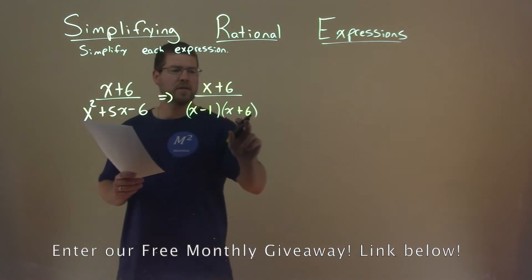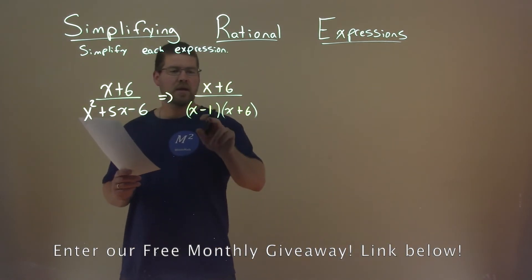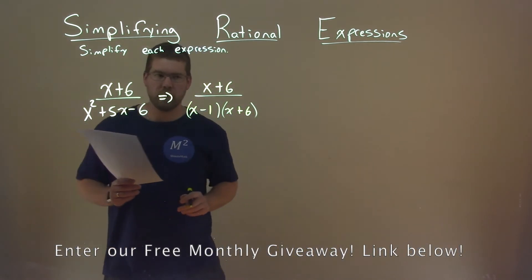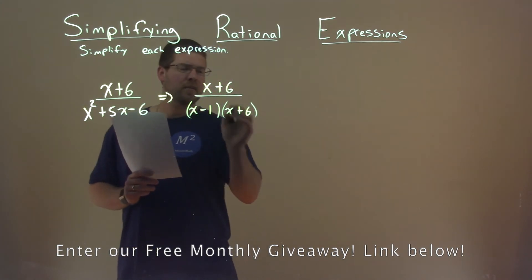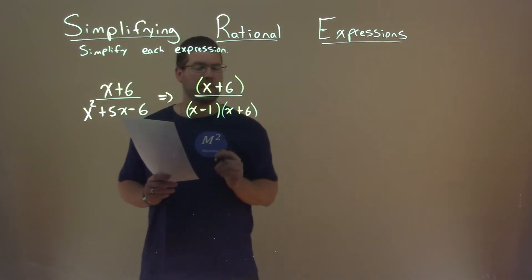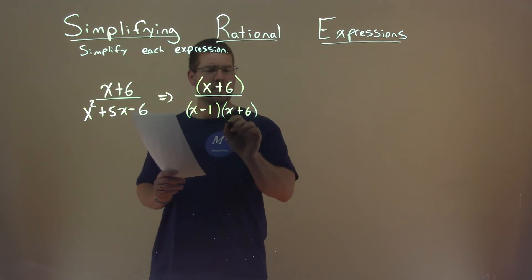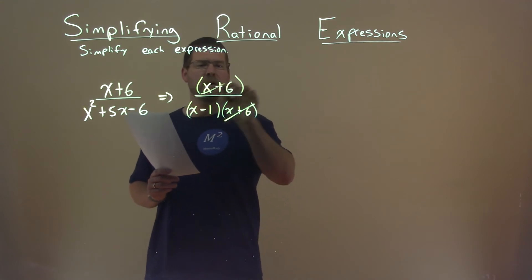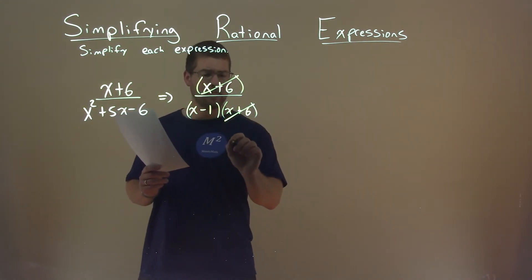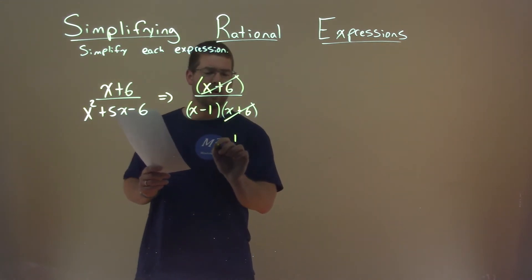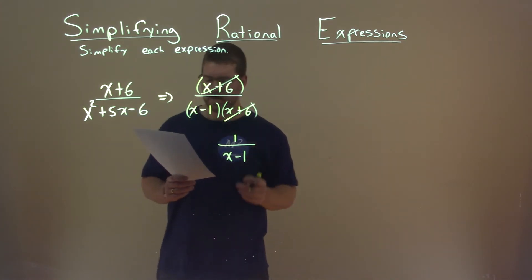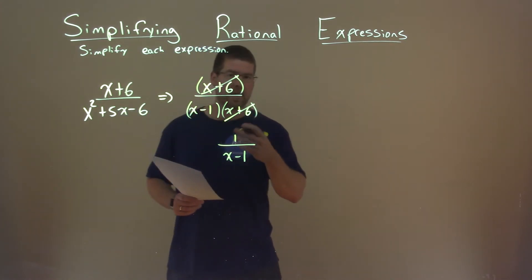Negative 1 times 6 is negative 6. Negative 1 plus 6 is positive 5. So notice the x plus 6 here is the same as in the numerator. Because of that, and it's being multiplied, they can cancel each other out, leaving us with 1 over x minus 1, and that is our final answer.